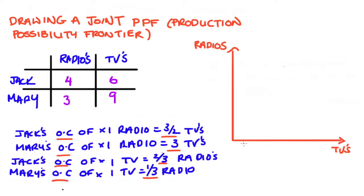Now what we're drawing when we're drawing this joint PPF is the production possibilities for the Jack and Mary economy. So they're working together now. So the intercepts, which are going to function to tell us the maximum amount of either good that the Jack and Mary economy can make, we're going to find that out by adding up the maximum amount of each good that both Jack and Mary can make.